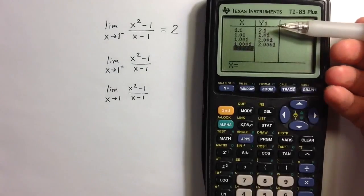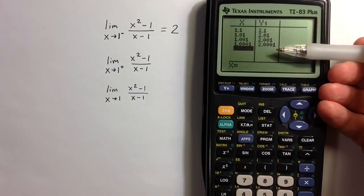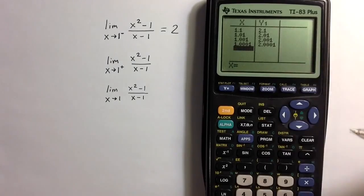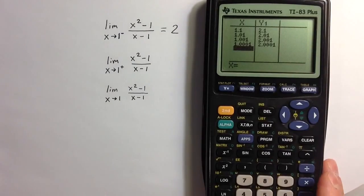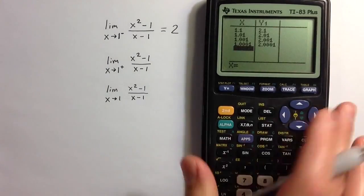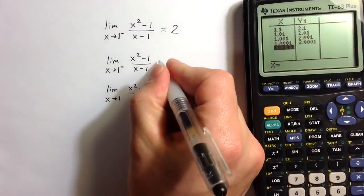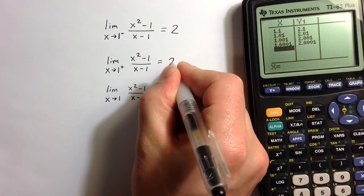And again, the y values that come out of the expression as x approaches 1 from the right, the y values seem to be approaching 2. So it indicates that the limit equals 2.